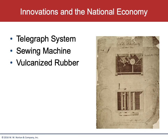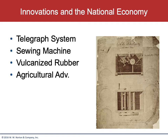Vulcanized rubber — developed by Goodyear — revolutionized industrial machinery and transportation vehicles, with all kinds of applications. But none of that matters without agricultural innovation. The steel plow, invented by John Deere, is significant. Eli Whitney had earlier demonstrated interchangeable parts by disassembling nine rifles, mixing the parts, and reassembling nine rifles — an innovation critical to the whole idea of mass production.